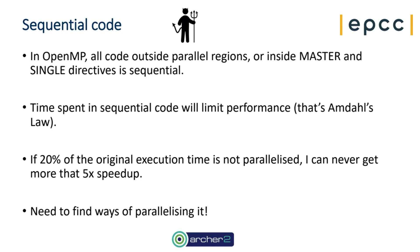First up is sequential code. In OpenMP, all the code outside of parallel regions, or code in constructs that only involve one thread like master or single, is sequential code. The time spent in sequential code is going to limit your performance — it's a simple Amdahl's law argument. For example, if code that takes 20% of execution time isn't parallelized, then you'll never get more than five times speed up, no matter how many threads you use.